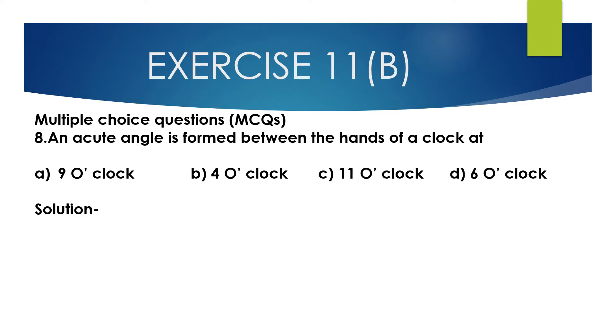Question number 8, multiple choice: An acute angle is formed between the hands of a clock at which time? The options are: 9 o'clock, 4 o'clock, 11 o'clock, and 6 o'clock.